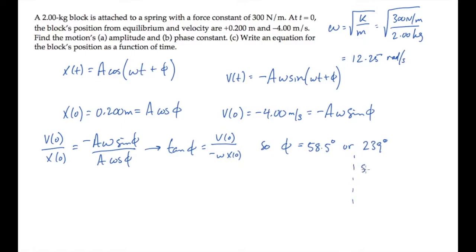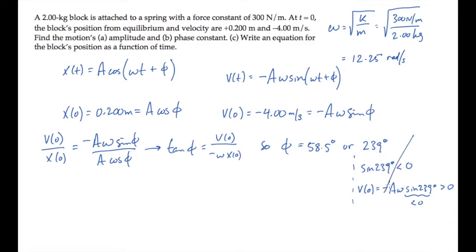One way to resolve this is to notice that sine of 239 degrees is negative — it's in the third quadrant. So if that were the phase constant, the velocity at time 0 would be minus A·ω times this negative value. There are two negatives, which means the initial velocity would be positive. But we know it's not — it's minus 4 meters per second — so the phase constant must be the first value, 58.5 degrees.